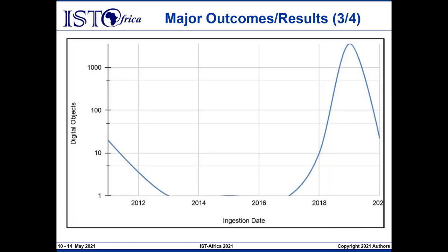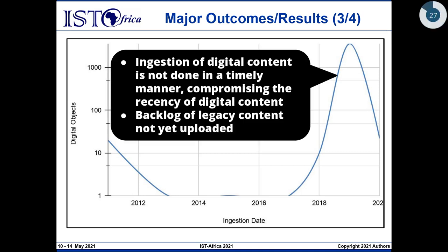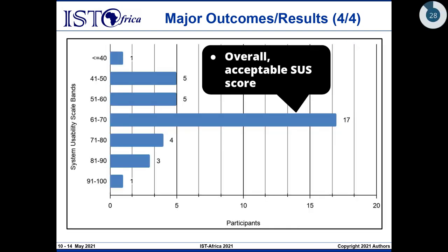In terms of the ingestion pattern, we see there are a number of irregularities associated with when content is ingested into the repository. This makes sense because there's a lean staff complement responsible for ingesting content. As a result, we've noticed that there's a backlog of legacy content that hasn't yet been uploaded to the repository.